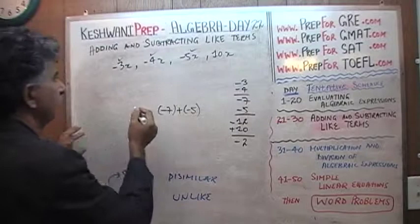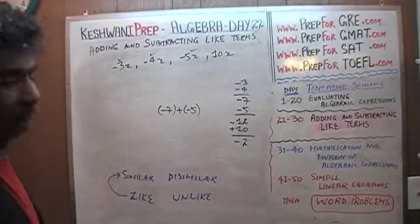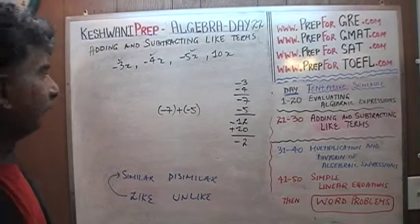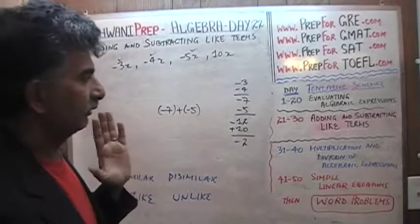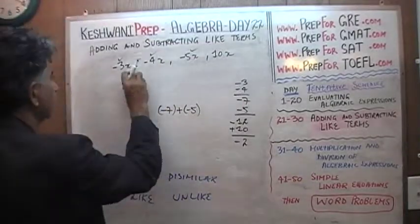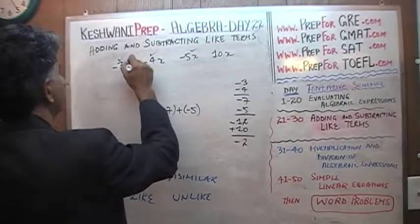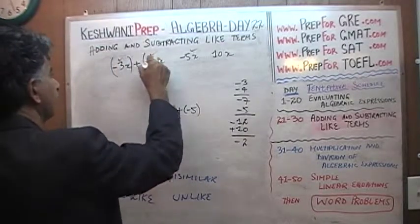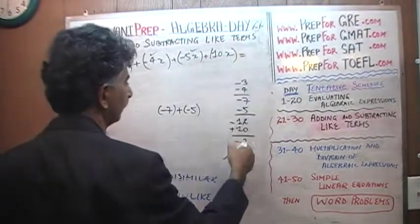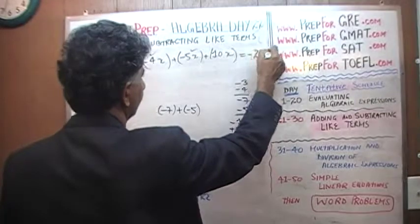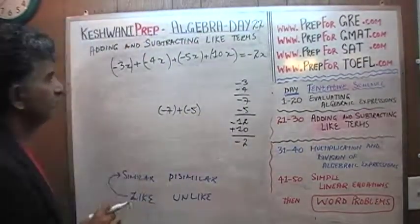And then finally we have positive 10, so that gives us negative 2 for the grand total. We are told to find the sum of these four terms — these are called terms — and it turns out the sum is negative 2. So negative 3x plus negative 4x plus negative 5x plus 10x equals negative 2x.